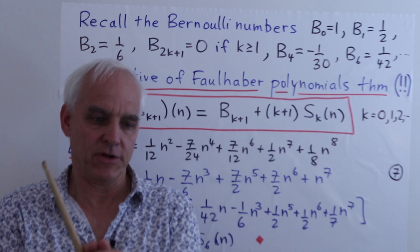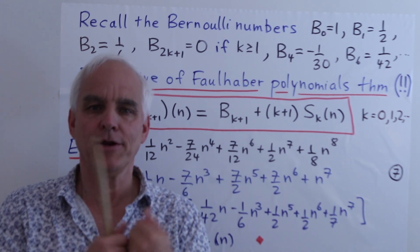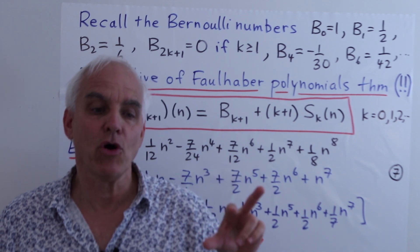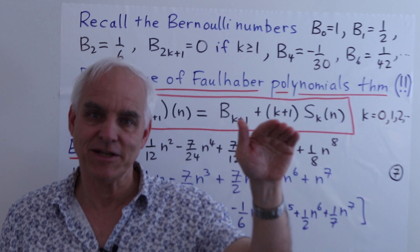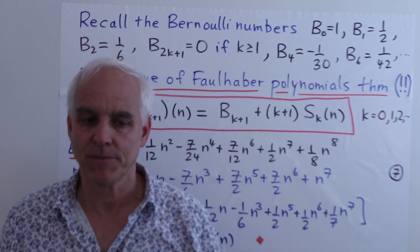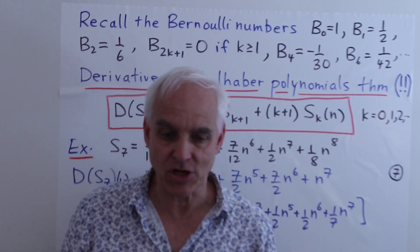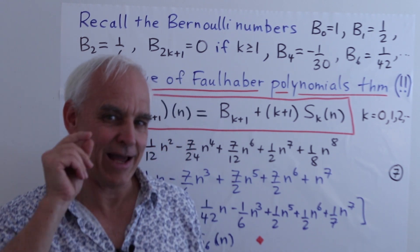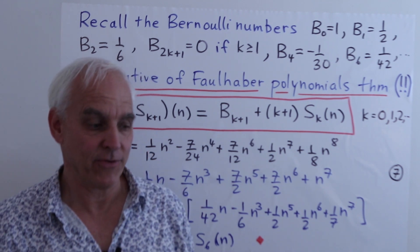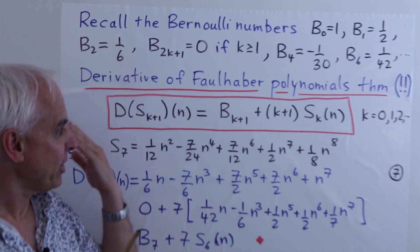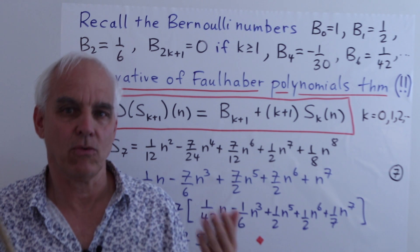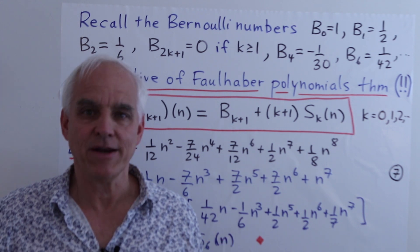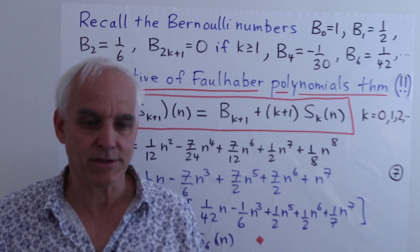Now we come to the main formula of the talk — a new understanding of the relationship between Faulhaber polynomials, directly motivated by Faulhaber's thinking. It turns out there's an analogous, simpler relation that applies directly to the Faulhaber polynomials as polynomials in little n. I don't really know how to say this — it's remarkable to me that this is not well known, and I cannot find it anywhere in the literature, so it may very well be new.